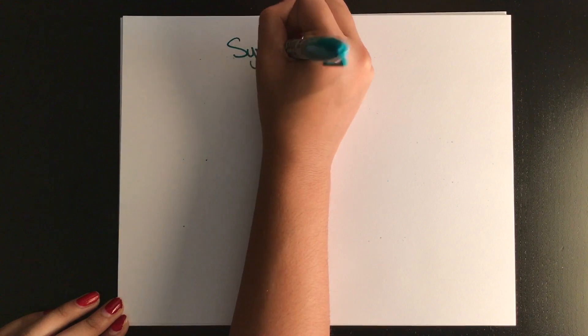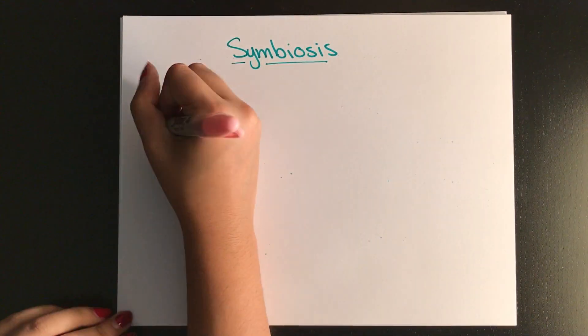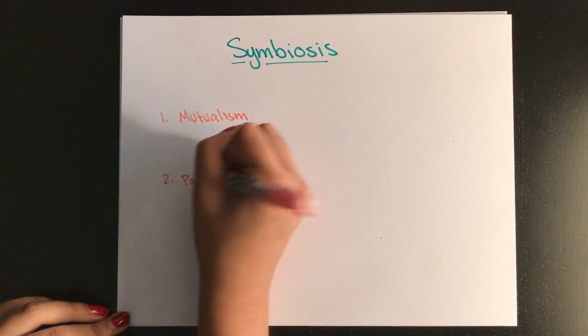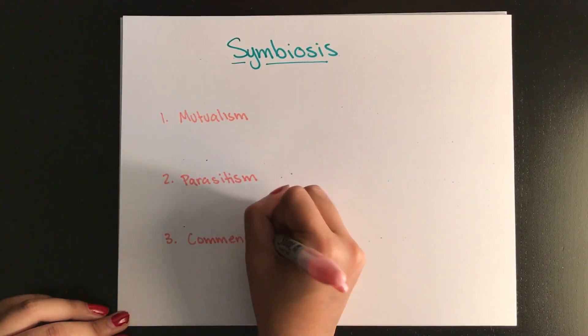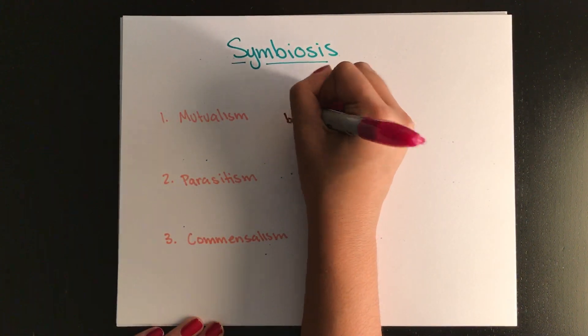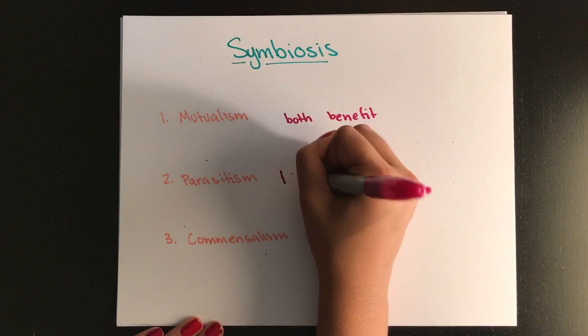Now we're going to talk about symbiosis, which is when organisms of two separate species live in the same place. The three types of symbiosis are mutualism, parasitism, and commensalism. We learned a little bit about mutualism already with the plant roots and bacteria. Mutualism occurs when both organisms benefit from association. Another example of this would be humans and the bacteria within our intestines.